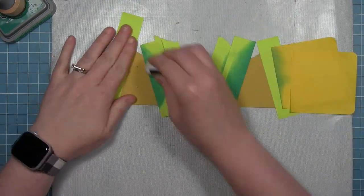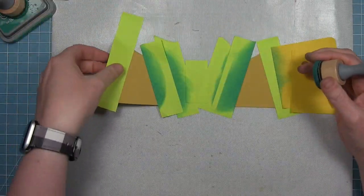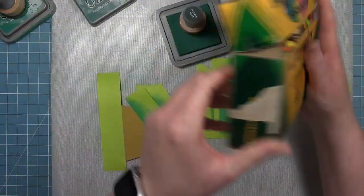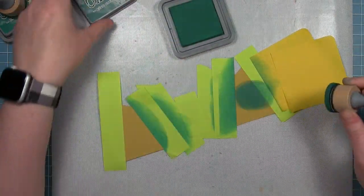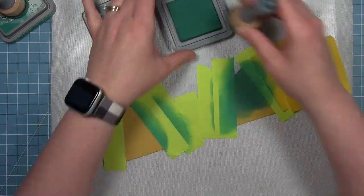And now I'm going to cover up the rest of it so again I don't make a mess. And I'm going to go ahead and erase my pencil lines before I start inking. So for the darker color, I'm using Pine Needles Distress Oxide.